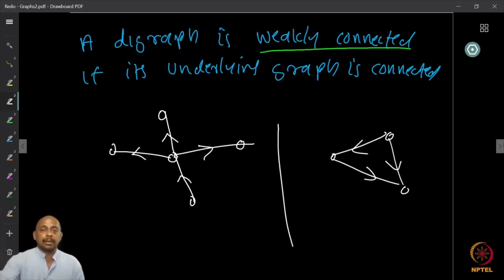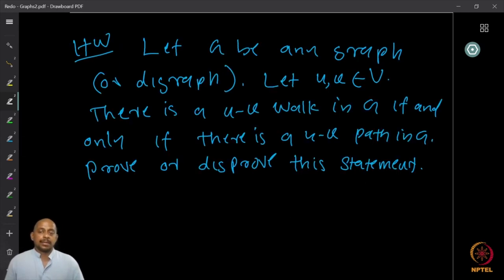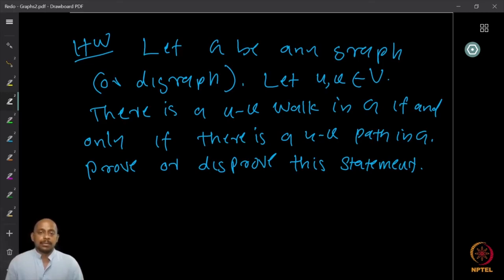A strongly connected graph is of course weakly connected, since if you can traverse in the directed graph you can always do so in the undirected graph. As a final question, for any graph or digraph G and any pair of vertices u, v, prove that there is a u-v walk in G if and only if there is a u-v path in G. Try to prove this for both graphs and digraphs.